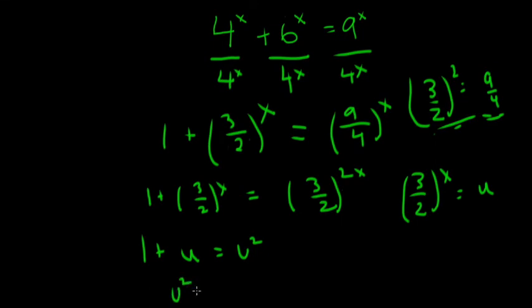And now we just solve for u. u squared minus u minus 1 equals 0. All I did was move this stuff to the right-hand side. To solve for u, we just use the quadratic formula: negative b plus or minus the square root of b squared minus 4ac over 2a. Solving gives us u equals 1 plus or minus the square root of 5 over 2.